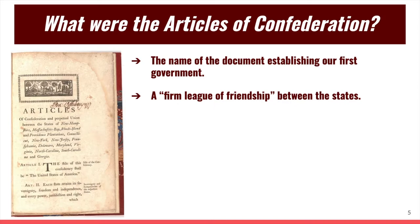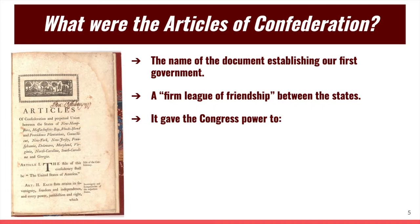So it basically said, 'hey, we're cool to hang together, but that's it.' It didn't bind the states into having to follow anything — as long as everyone agreed, it was fine, but if there was disagreement, there was nothing in the document that could force anyone to do anything. Under the Articles of Confederation, we only had a Congress — we did not have a president and we did not have a court system. So in terms of your vocabulary, we only had a legislative branch of government; we did not have an executive and we did not have a judicial branch. The Congress under the Articles of Confederation had a few powers, and they were very limited.